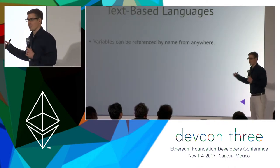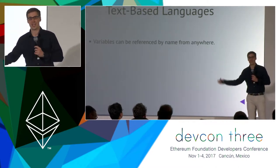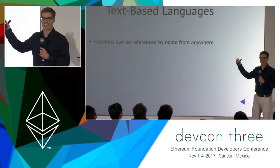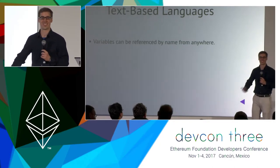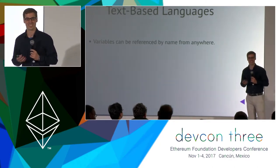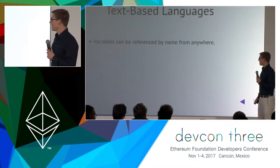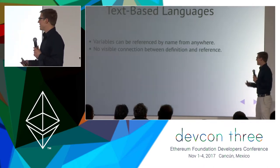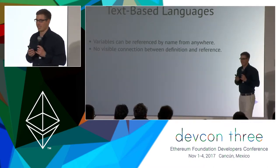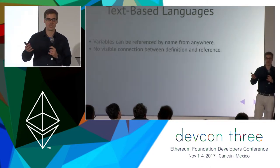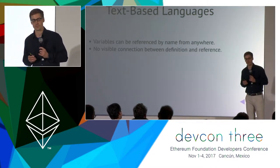Imagine walking the streets of Cancun, shouting 'Vitalik Buterin,' and Vitalik just pops up next to you. That's weird — that doesn't really work in the real world, so why should it work in programming languages? The problem is there's no visible connection between the declaration of something and the referencing of something.